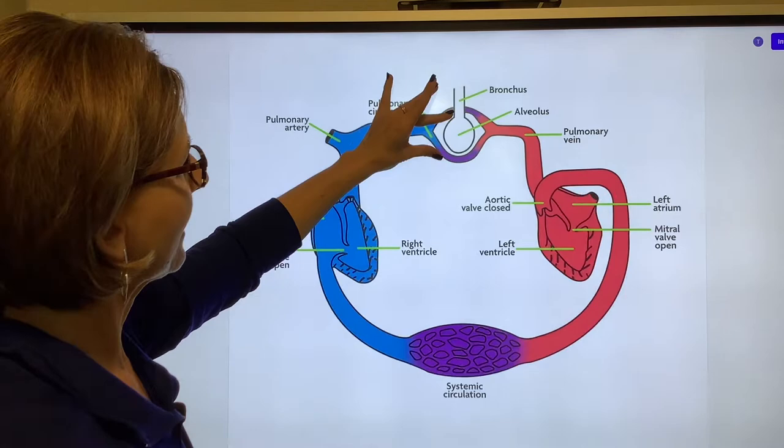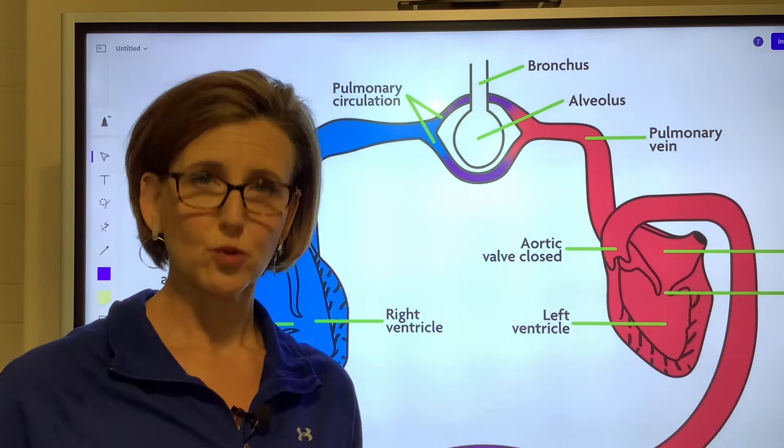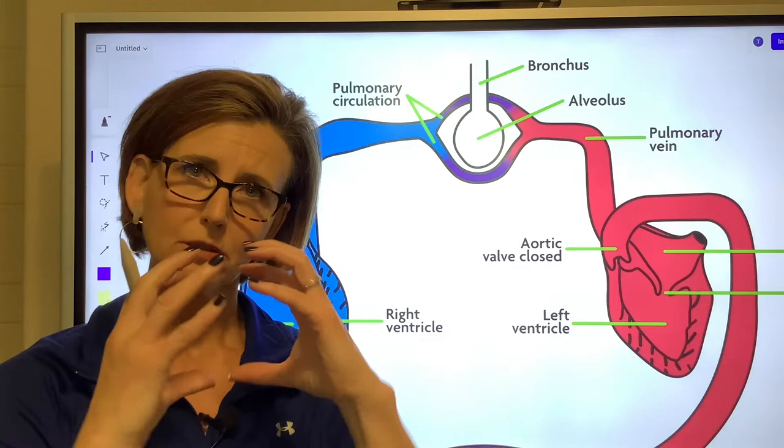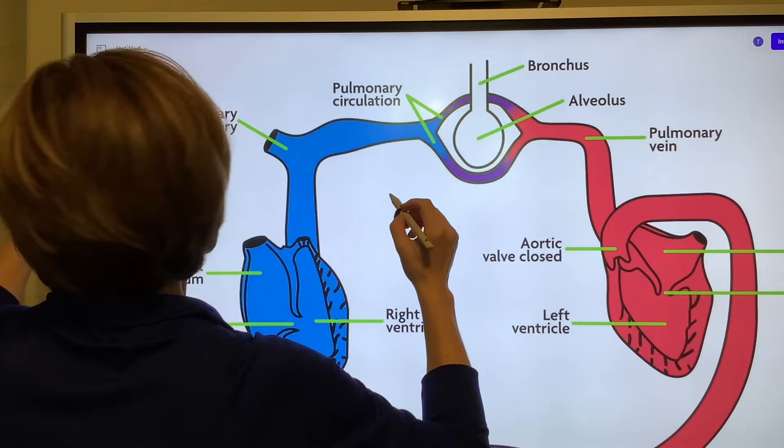Okay, so when we breathe, our diaphragm drops and air from the atmosphere floods into our alveoli until we get a pressure equilibrium. But if we just look at that pressure, we have in here the pressure called the PAO2, alveolar oxygen tension.